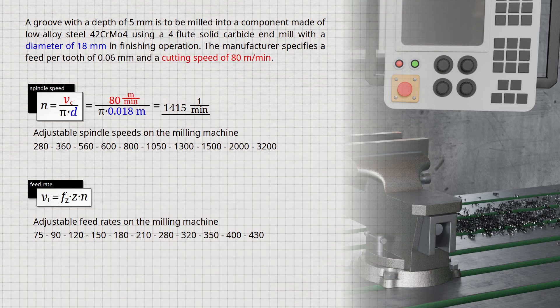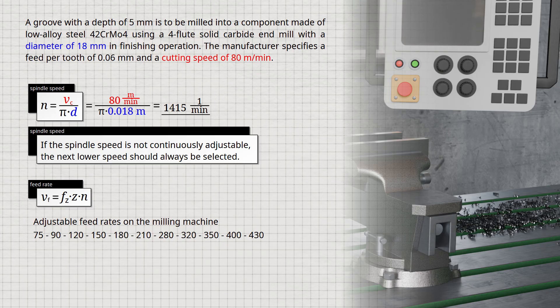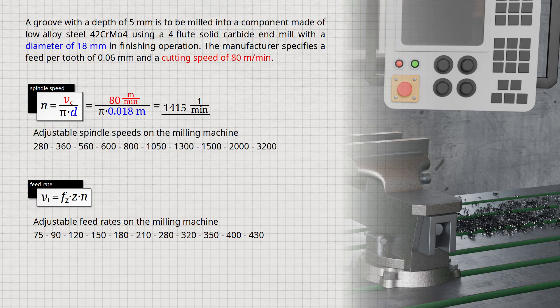This speed cannot be set exactly on the machine, since only stepped values are available. In such cases, the rule is to always choose the next lower available speed, not the nearest one. If the nearest value were higher than the calculated one, the manufacturer's recommended cutting speed would be exceeded. This could damage the cutting edges due to excessive cutting speed or drastically reduce tool life. Therefore, remember, if stepless adjustment is not possible, always select the next lower speed. In this case, a spindle speed of 1300 revolutions per minute is selected.